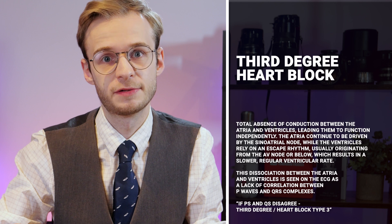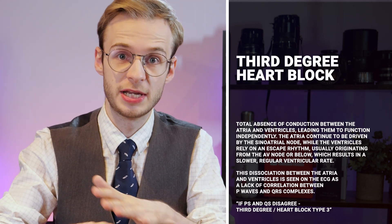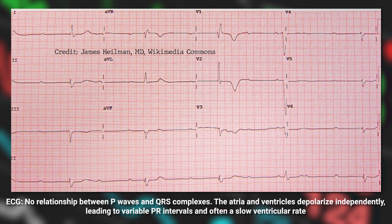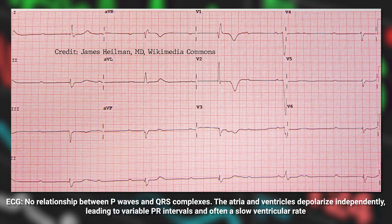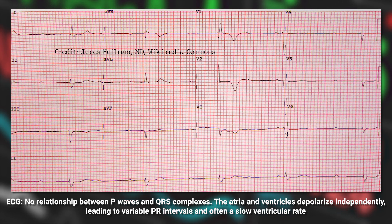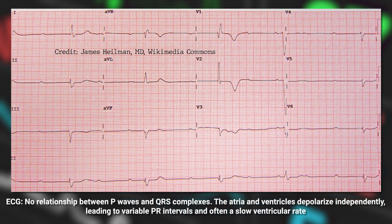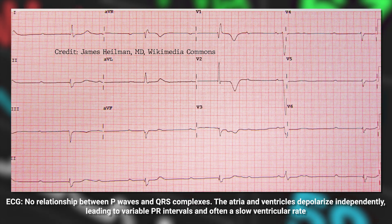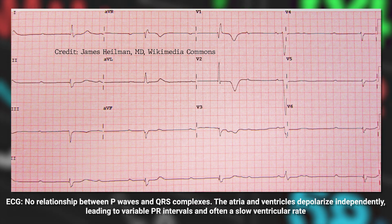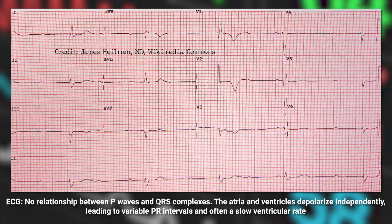In complete heart block, or third degree heart block, there is total absence of conduction between the atria and ventricles, leading them to function independently. The atria rely on the sinoatrial node, while the ventricles use an escape rhythm from the AV node or below, giving a much slower ventricular rate. On the ECG, we see complete dissociation between atrial and ventricular rates — P waves and QRS complexes show no correlation. As the rhyme goes: if P's and Q's do not agree, that's third degree.